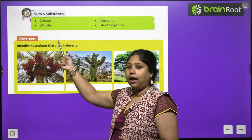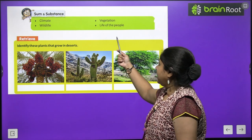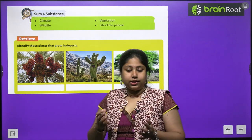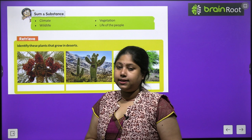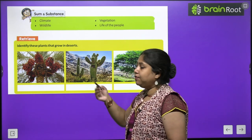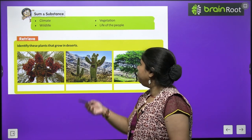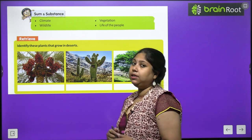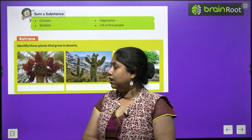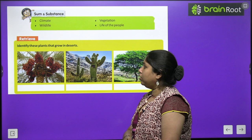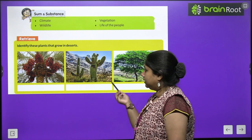We will know about the climate that prevails in deserts, then the vegetation found in deserts, then wildlife — kis tarah ke jeev jantu milte hain in jagaho pe — and last, how people live in the desert regions. Before that, let us identify some of the plants that grow in the desert region.